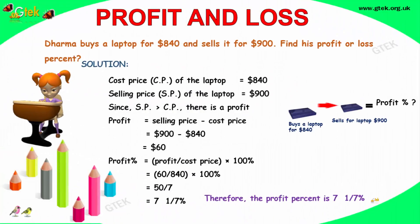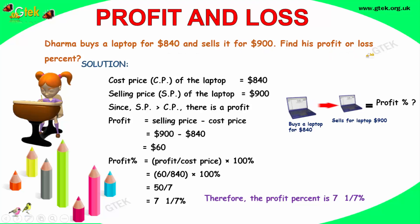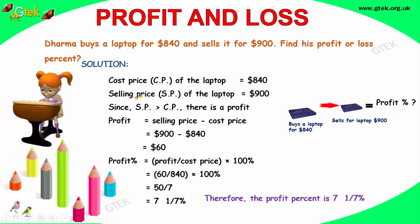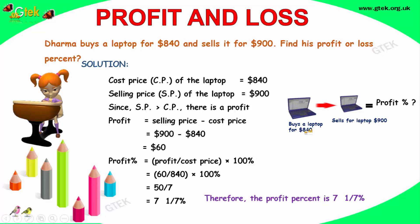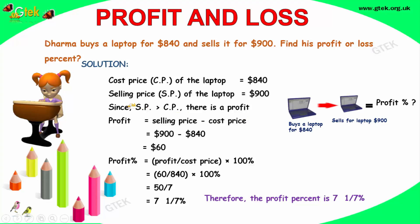Dharma buys a laptop for $850 and sells it for $900. Find his profit or loss percentage. So cost price of the laptop is $840 and selling price is $900. Selling price is greater than cost price, so there is a profit. The profit is selling price minus cost price, that's $60.